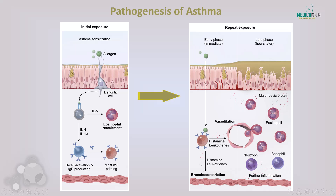First, let's talk about what happens during the initial exposure to an allergen. In the left panel, when an allergen such as pollen enters the respiratory tract, it is captured by dendritic cells. These dendritic cells present the allergen to T helper 2 cells. In response, the T helper cells release interleukin-5, which is crucial for the recruitment of eosinophils — key inflammatory cells in asthma.